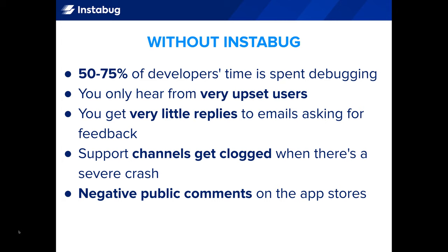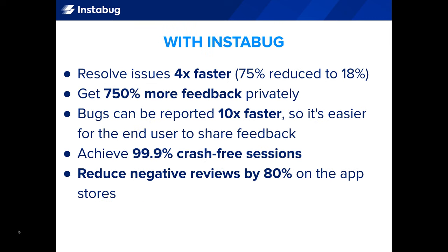When you're in a reactive state without Instabug, your developers are spending most of their time debugging. You only hear feedback when users are very upset. When you ask for feedback via email, you get very little replies. When a crash happens, your support channels get clogged, and those very upset users are leaving negative comments on the app stores. On the other hand, with Instabug you're resolving issues four times faster. Your app users are sending 750% more feedback because there's a super easy and quick way to do so from right inside your app. You're achieving 99.9% crash-free sessions, and those negative reviews are reduced by 80% because you're getting feedback privately.